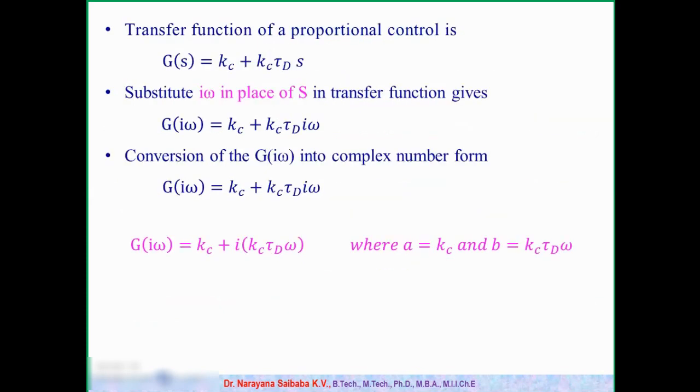Now coming to our system, we have a PD controller. For PD controller, the transfer function is given as Kc*(1 + tau_d*s). If you expand, you will get Kc + Kc*tau_d*s. So first we got our transfer function. Next step is we have to replace this s term with the i*omega. Then our transfer function will become G(i*omega) = Kc + Kc*tau_d*i*omega.